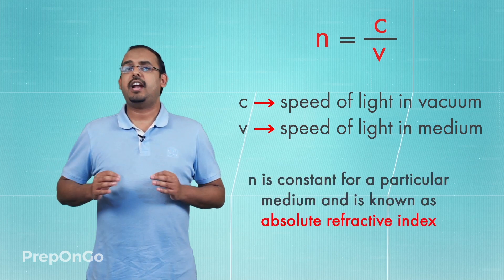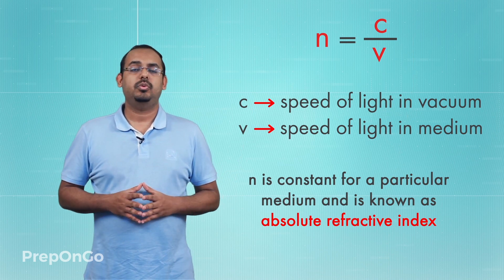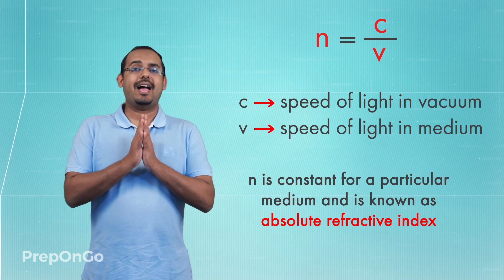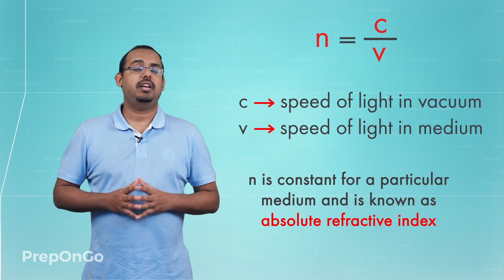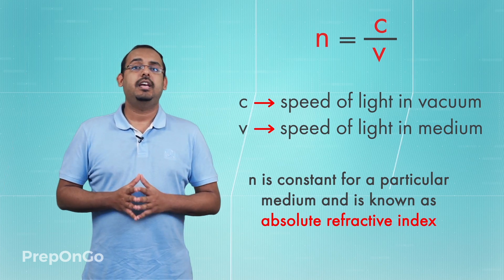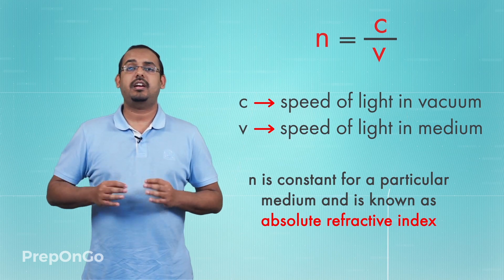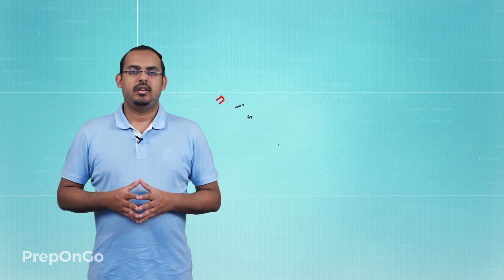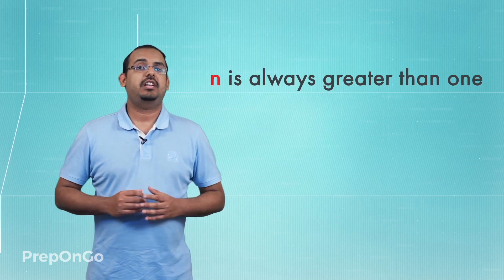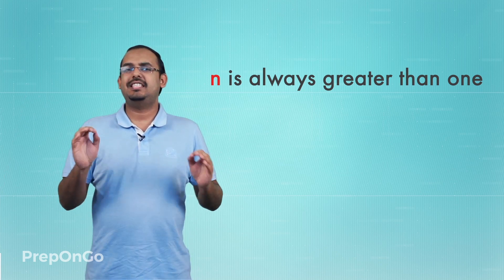The value of refractive index for a particular medium is a constant value. Due to this, it is also known as the absolute refractive index. The value of the absolute refractive index is always greater than one — this is easily calculable.